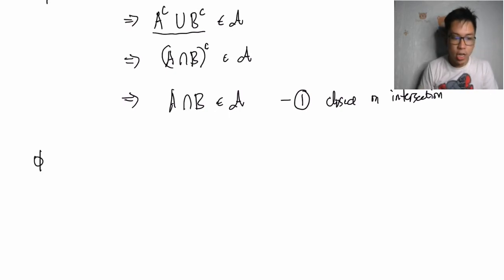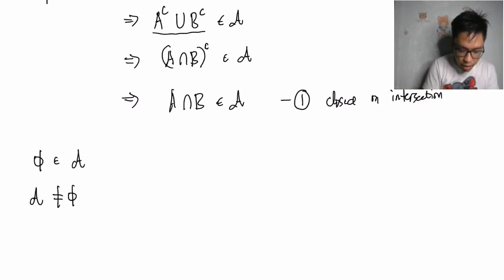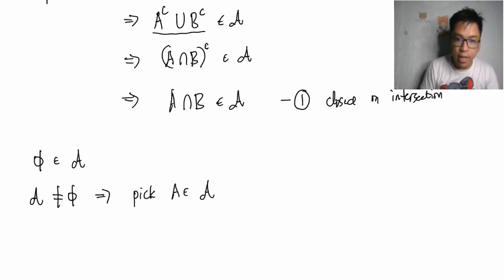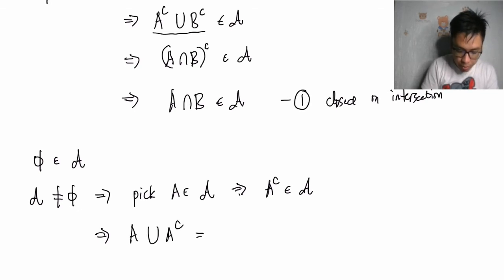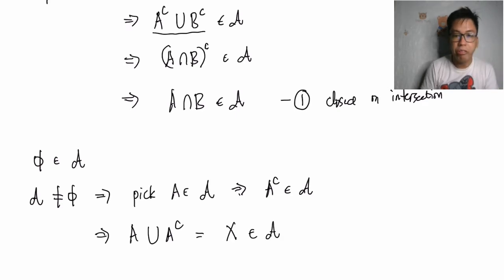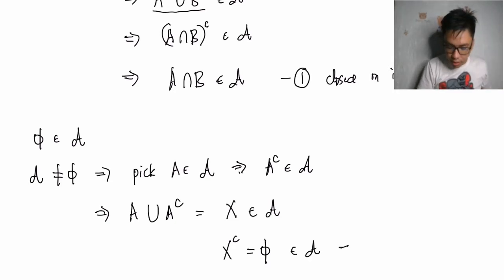Moreover, the empty set is an element of the algebra. Because the algebra is a non-empty collection, we can pick an element A from it — and its complement is also in A. Since the algebra is closed under finite union, we can take the union of A and its complement, which equals X. So X is an element of the algebra. And taking the complement of X gives the empty set, so the empty set is also an element of the algebra. That's remark number two.